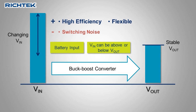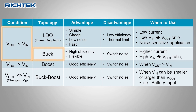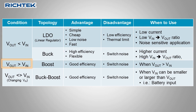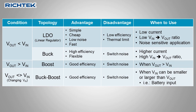Buck-boost converters are often used in systems powered by batteries or any application where the input voltage can be higher or lower than the output voltage. To summarize: when you need to step down the input voltage, choose an LDO when the application current is low, the step-down ratio is low, or when powering noise-sensitive applications. Choose a buck for applications with higher current or higher step-down ratios. When you need to step up the input voltage, use a boost converter. When the input voltage can vary either above or below the output voltage, you need a buck-boost converter, often used in battery-operated equipment to maintain a stable output over the full battery voltage range.